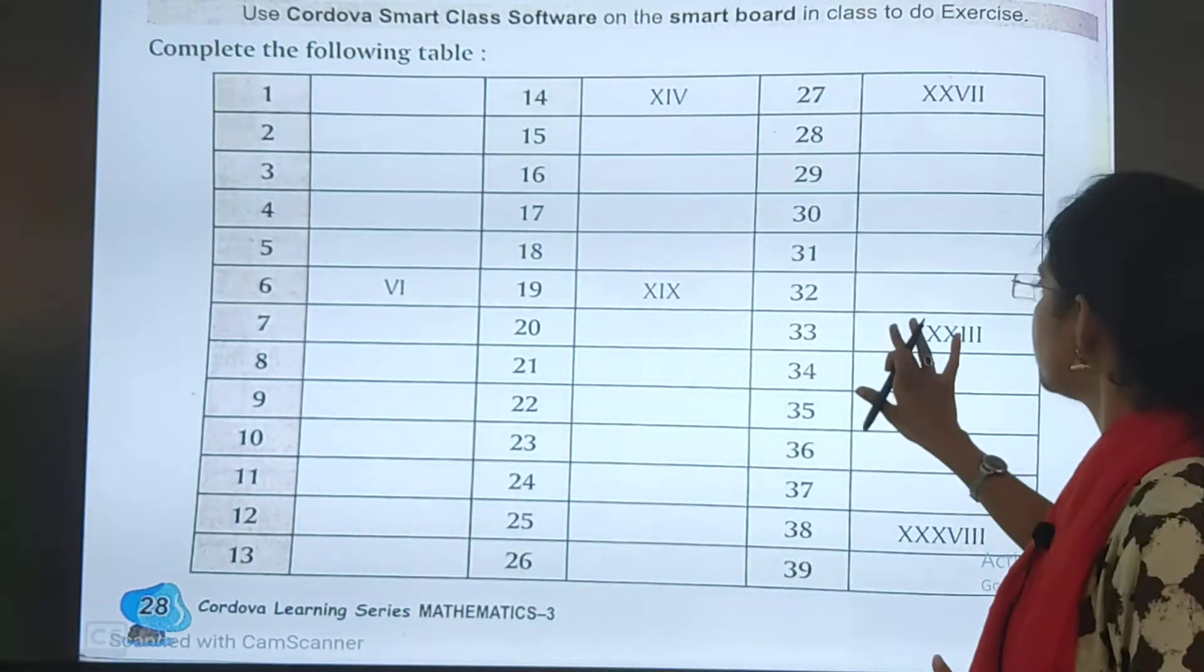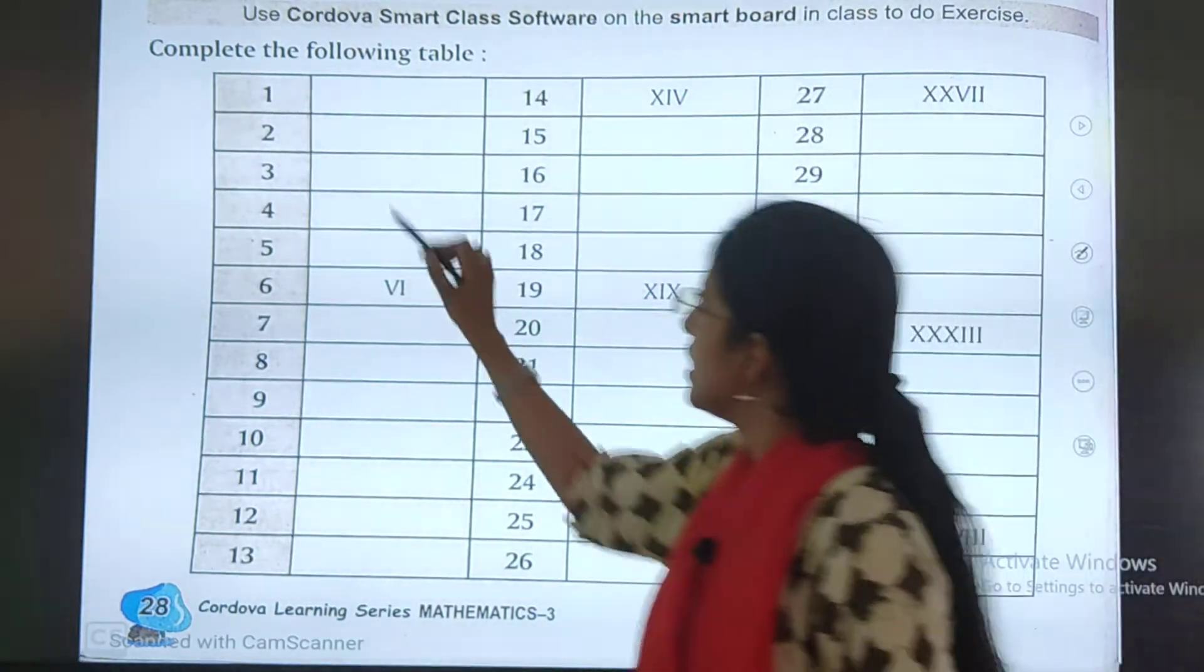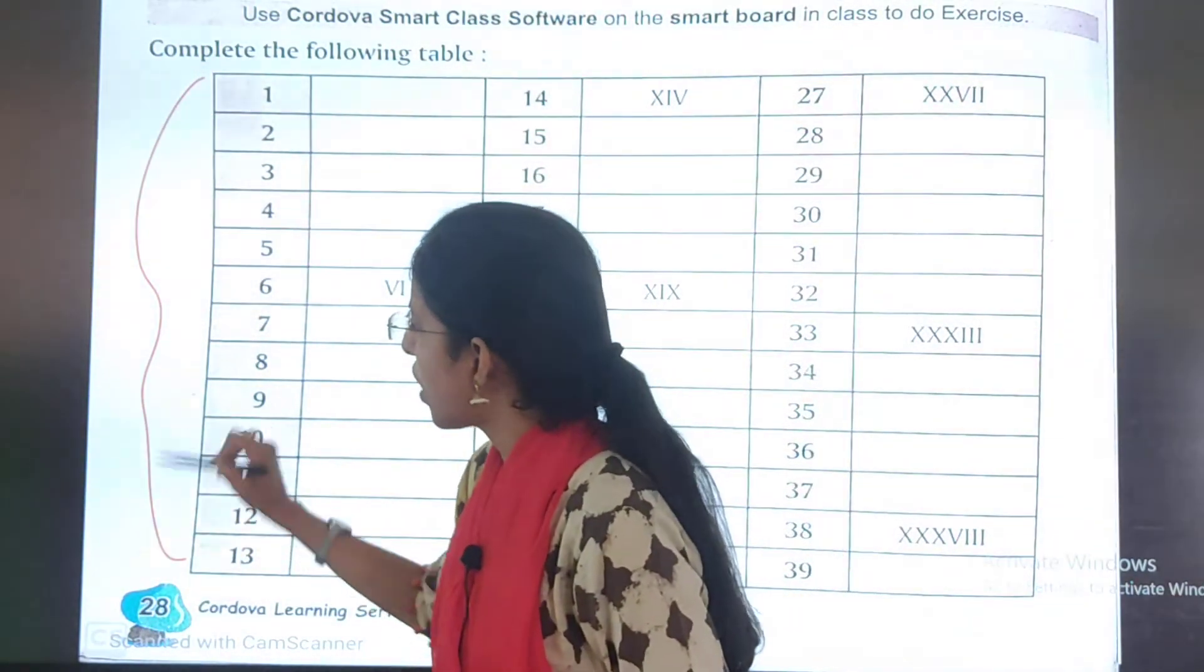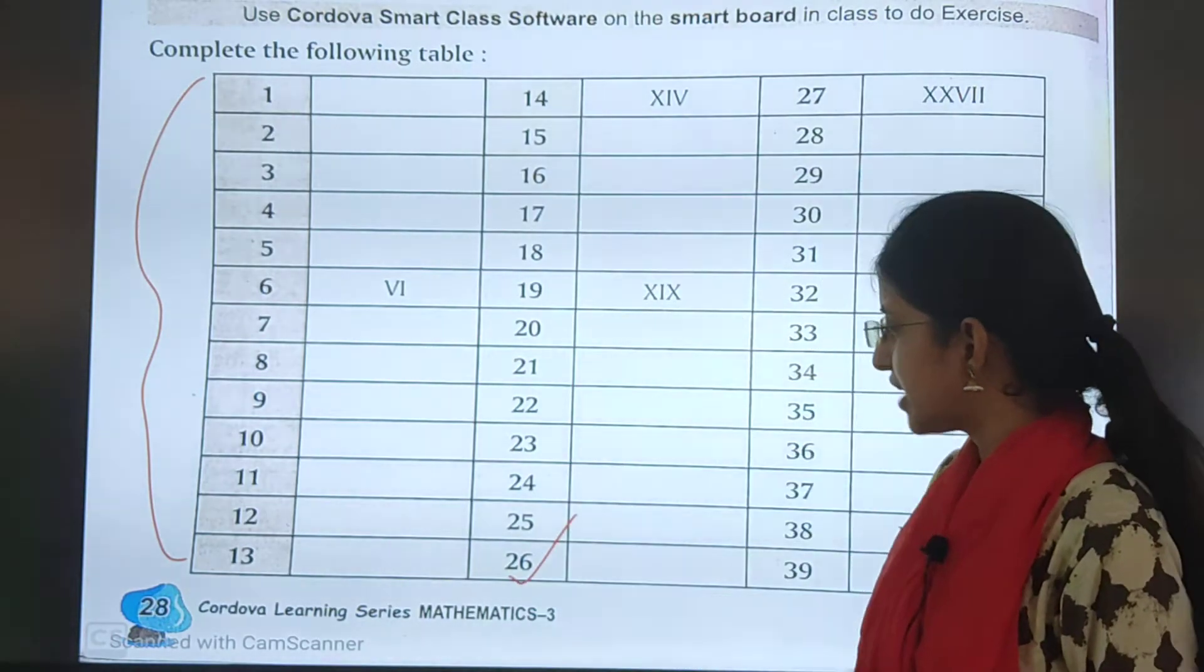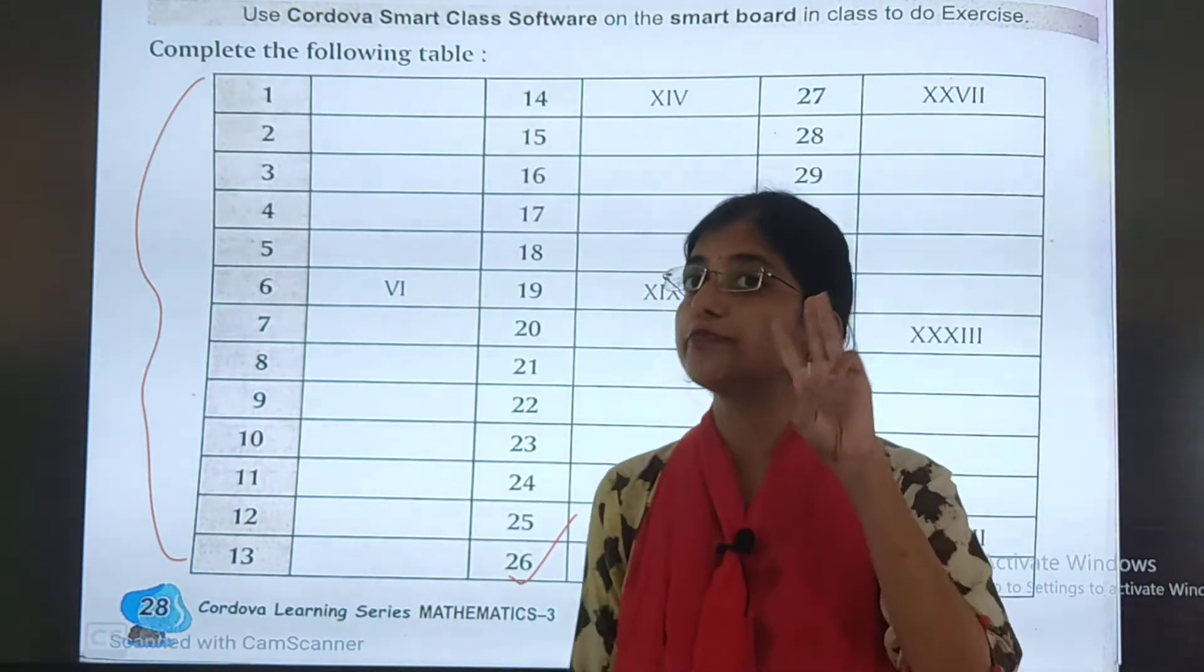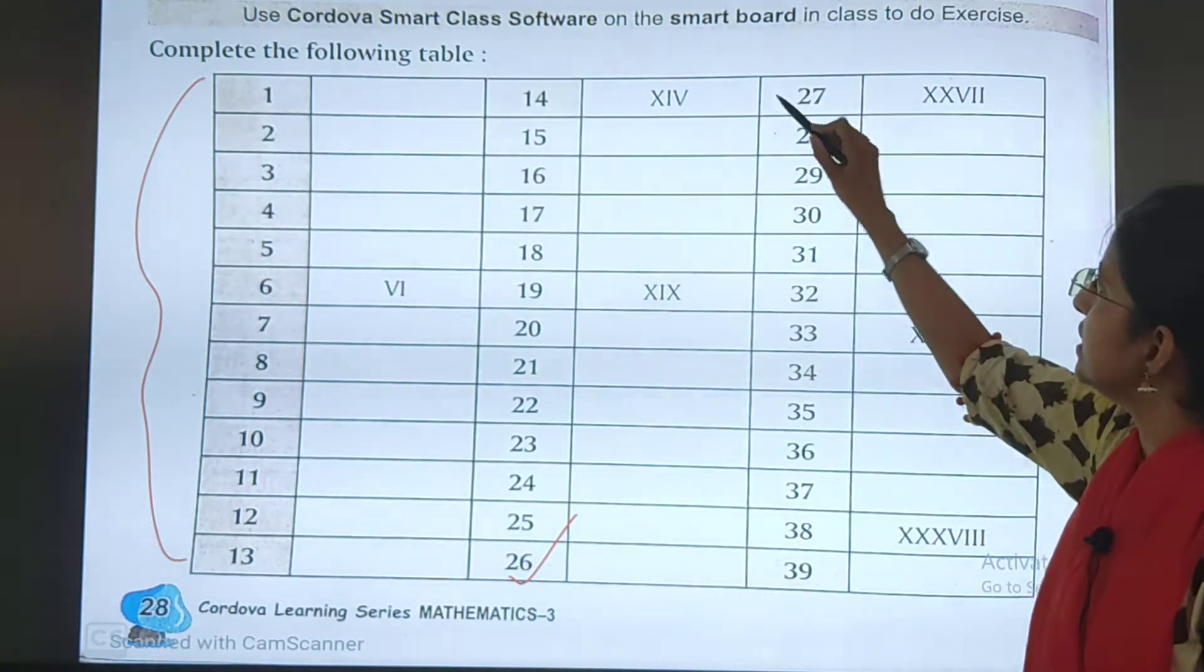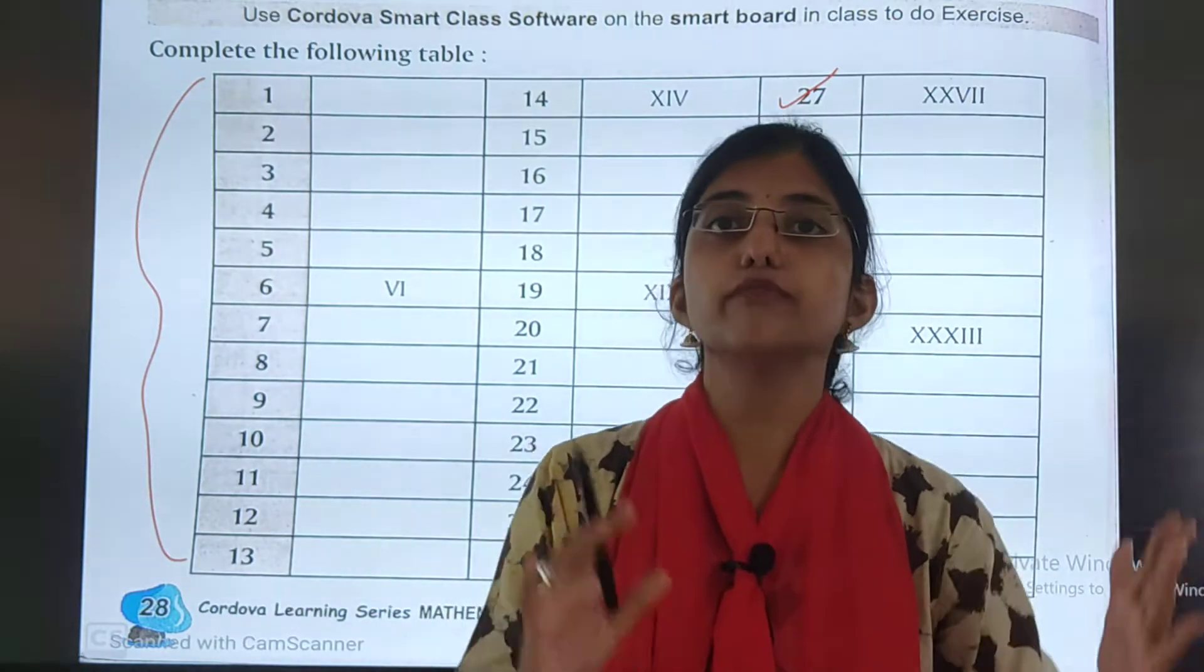In the first part we completed this, right? In part 1. In part 2 we did till 26 and now this is part 3. Today we are going to start from 27. How to write Roman numerals from 27.